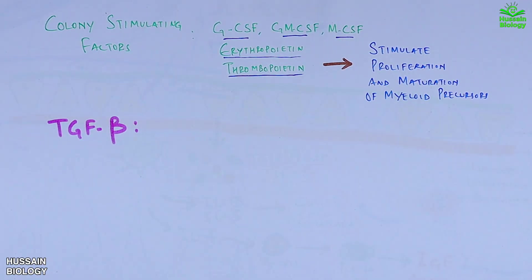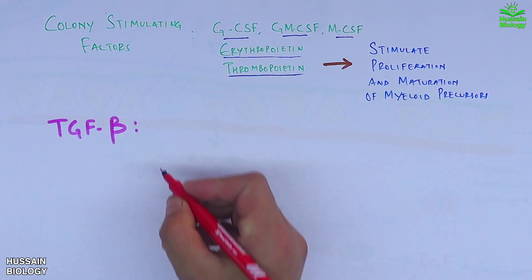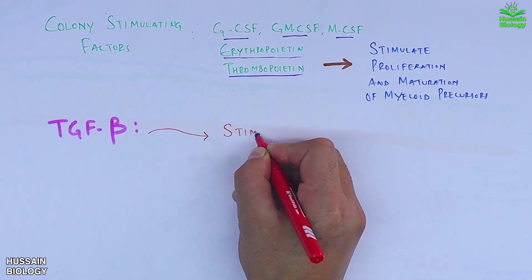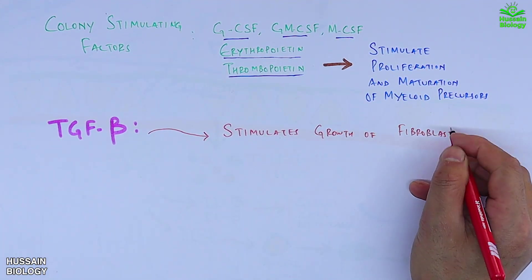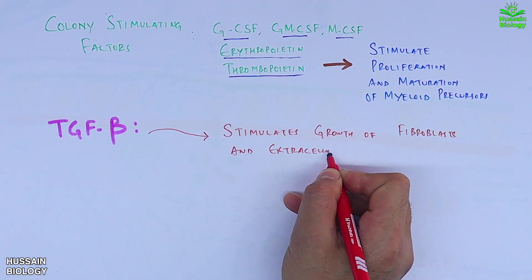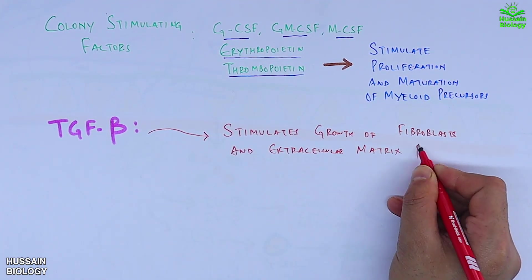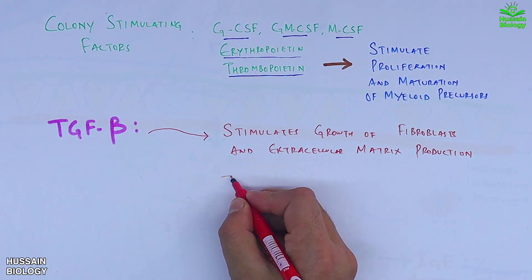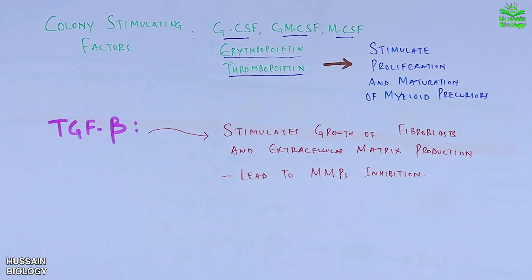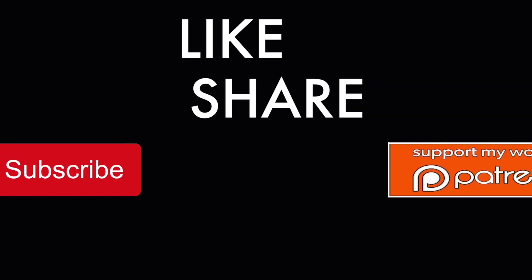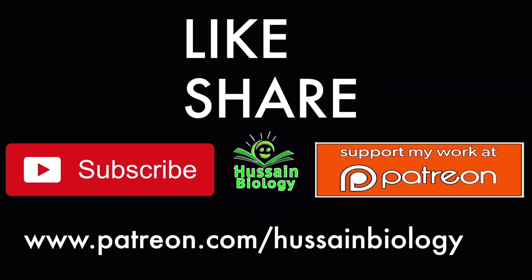Finally, we have TGF-beta, which stimulates growth of fibroblasts and extracellular matrix production. TGF-beta also leads to MMP inhibition. So this is what cytokines are and their classification.